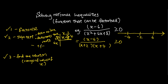We need to determine each portion — whether it is positive or negative. There is a very special pattern about rational inequalities: the signs alternate. So if this portion is positive, the next would be negative, then positive, then negative, and so on. We only need to test one particular portion, and then we know the rest will be alternating signs.